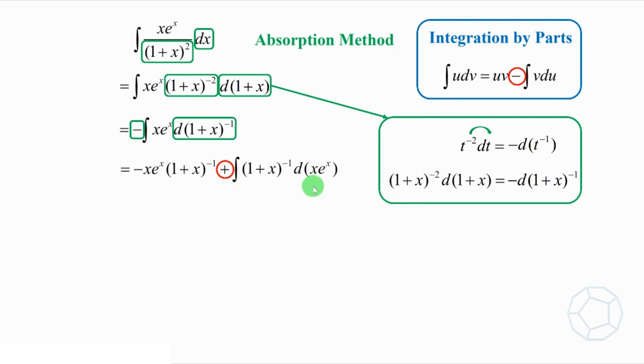Now, we look at this term. To differentiate x times e to the power of x, we use the product rule. The d of x times e to the power of x dx is equal to 1 times e to the power of x plus x times e to the power of x.